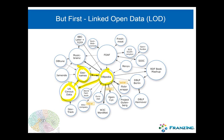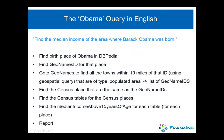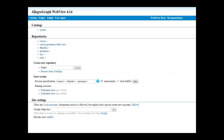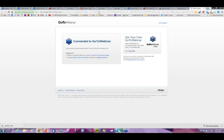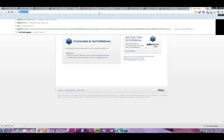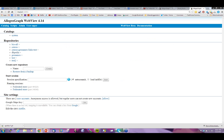You have three different databases built by people who don't even know each other, who took care to make sure that some of the links are public, standardized, and shared. Here's the English version of the Obama query — I'll leave it in so you can read it later. I'm going to give you a quick demo of how this works in practice.